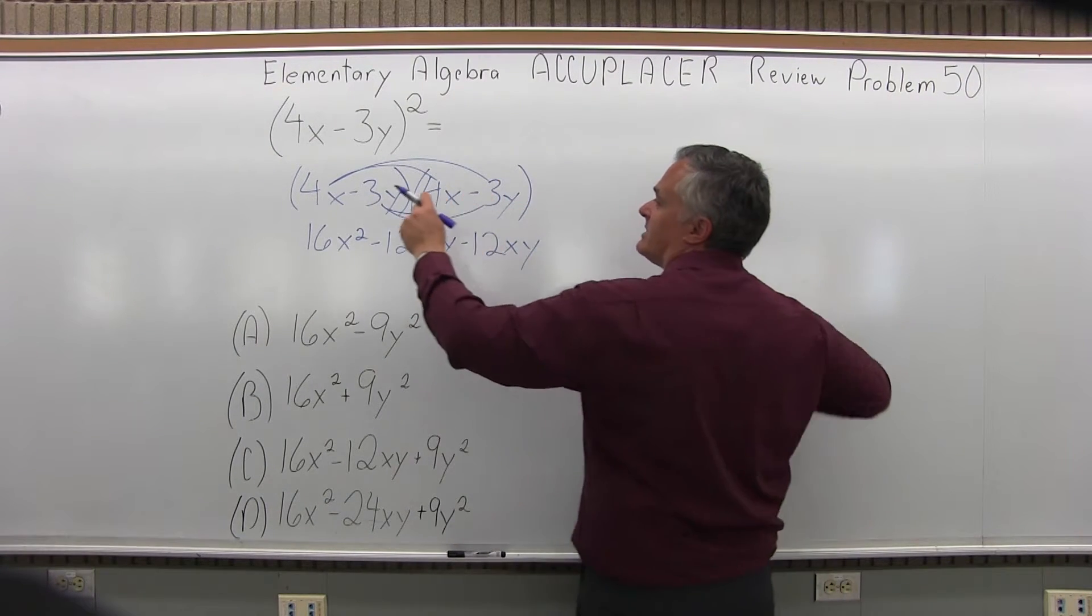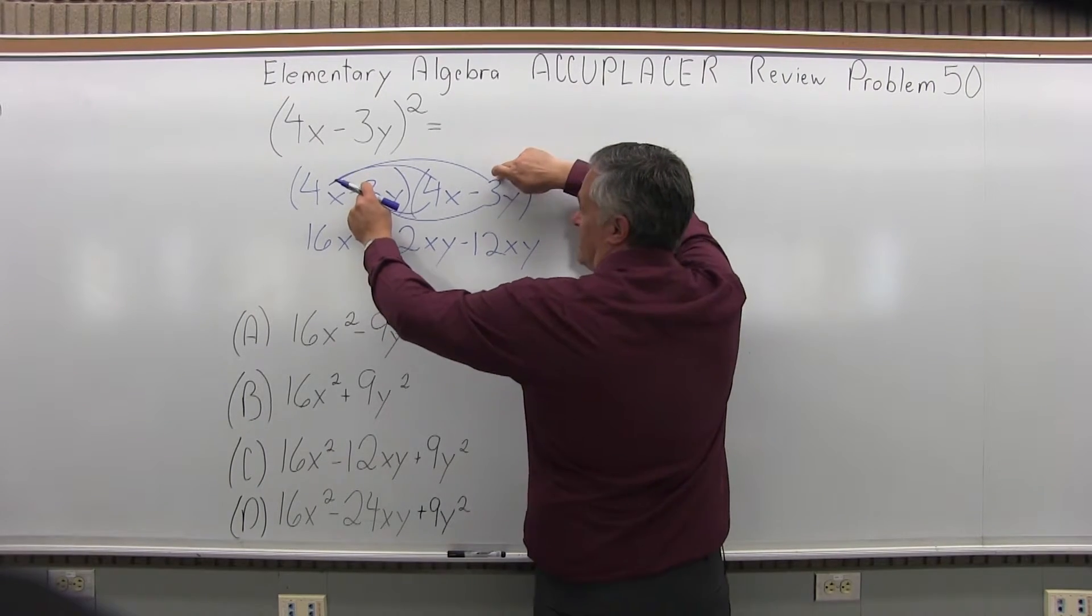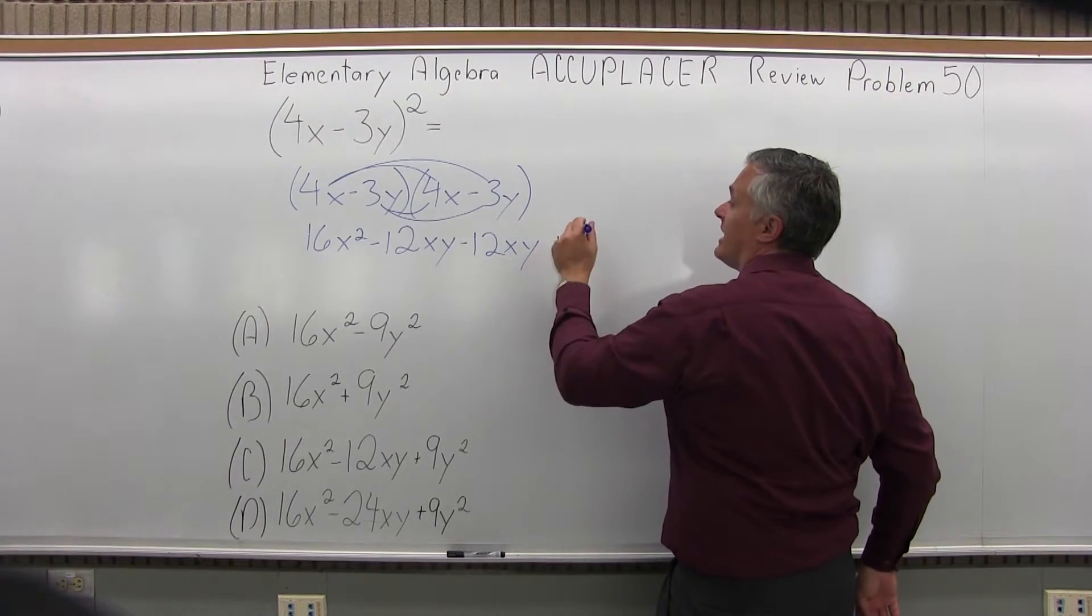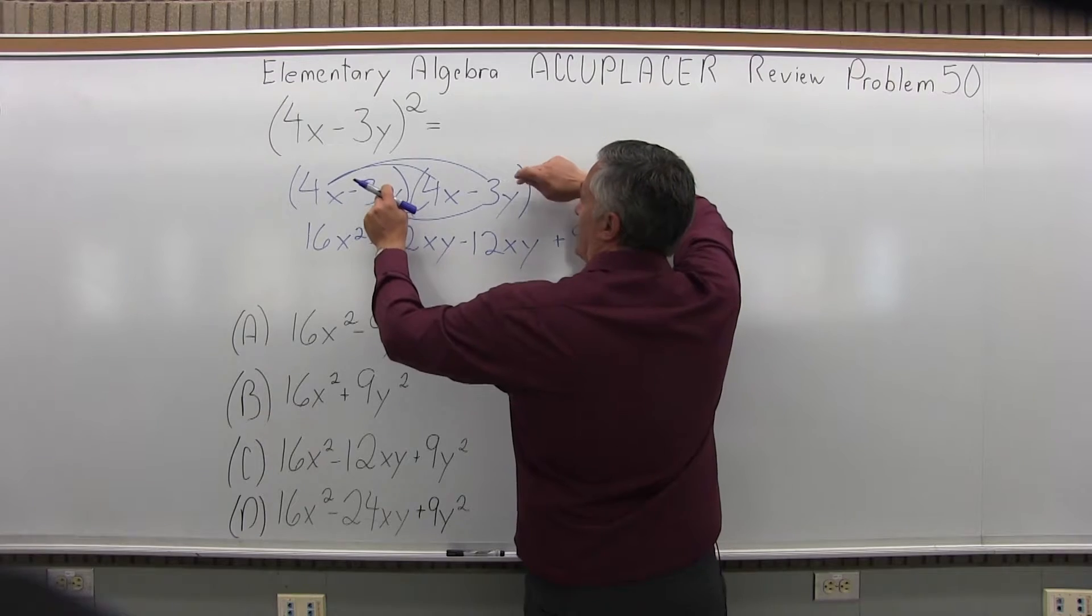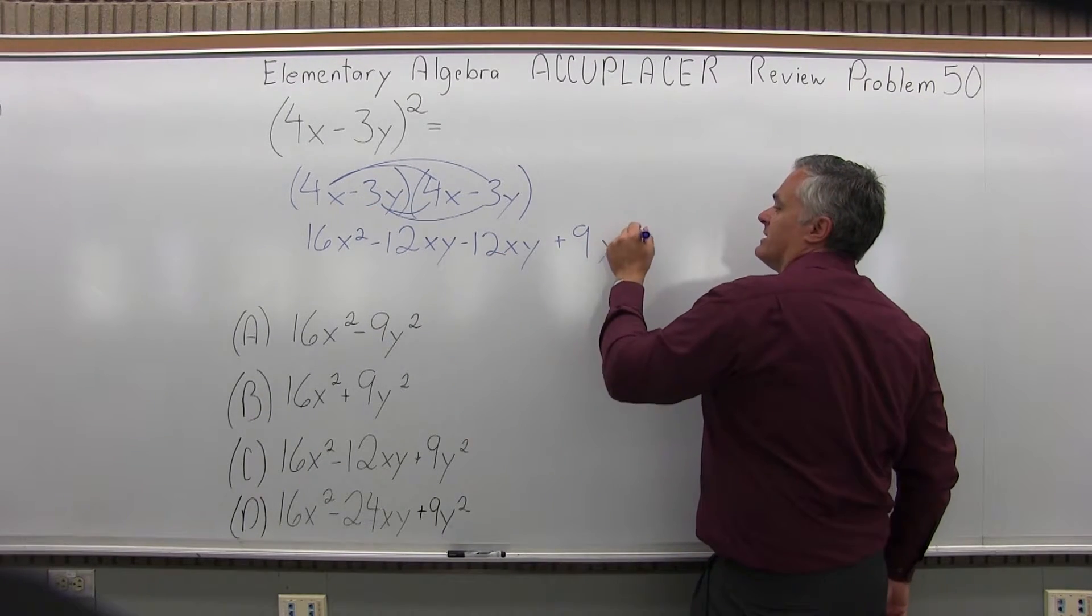And then finally, negative 3y times negative 3y. Pay attention to your signs. Negative 3 times negative 3 is positive 9. And then y times y would be y squared or y to the second.